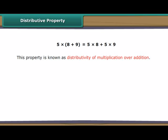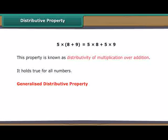Look at this expression: 5 into bracket starts 8 plus 9 bracket closes. It can also be written as 5 into 8 plus 5 into 9. This property is known as distributivity of multiplication over addition. It holds true for all numbers. We can therefore generalize it with variables as bracket starts A plus B bracket closes into C is equal to A into C plus B into C.